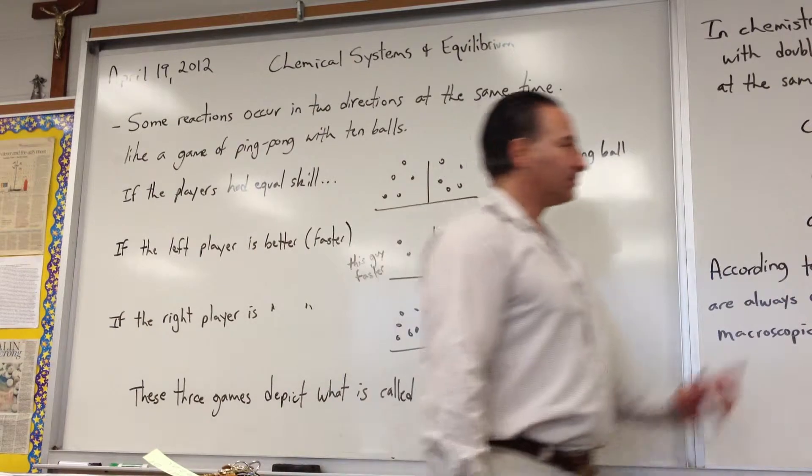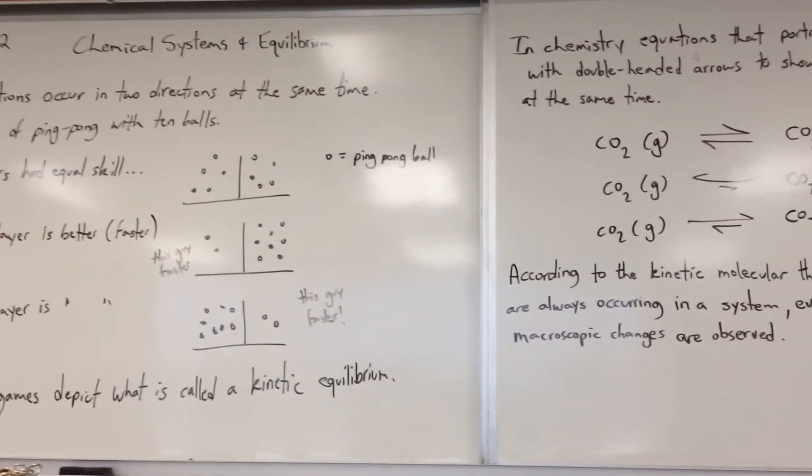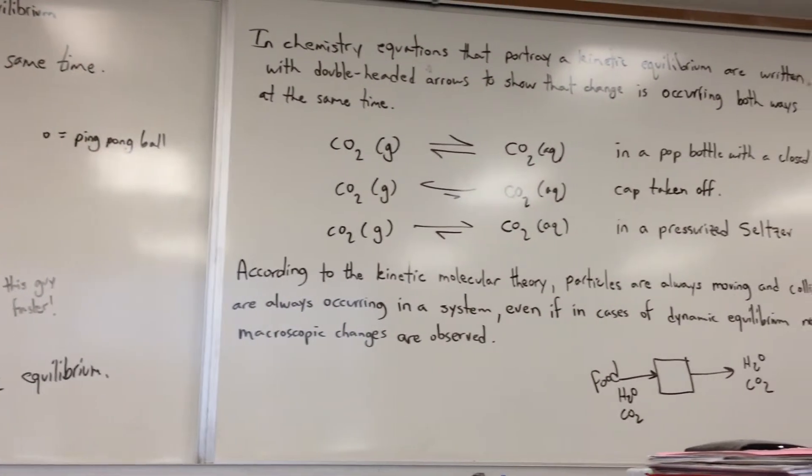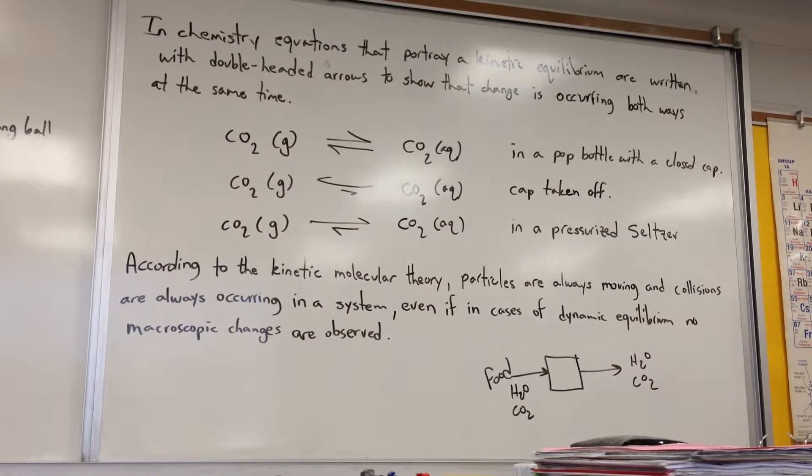In chemistry, equations that portray a kinetic equilibrium are written with double-headed arrows to show that change is occurring both ways at the same time.